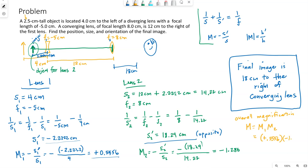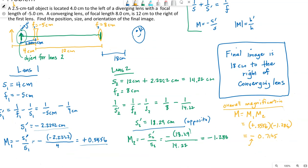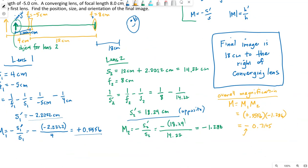minus 1.286. We're getting negative 0.7145. Overall magnification means the final image is inverted because we got a negative answer. So that's the orientation.